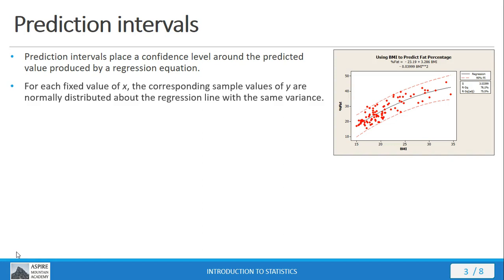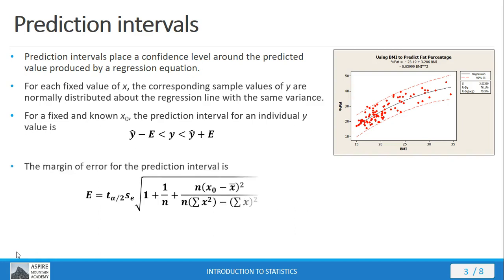For each fixed value of x, there's a corresponding value of y that are normally distributed about the regression line with the same variance. These are the values that are inside the prediction interval. For a fixed and known value of x naught, which is just a variable that we're putting into our regression equation, the prediction interval for an individual y value is given by this expression here. We've got a prediction that's made by the regression equation, that's the y-hat, and then we're going to have a margin of error that we add and subtract to get our upper and lower limits.